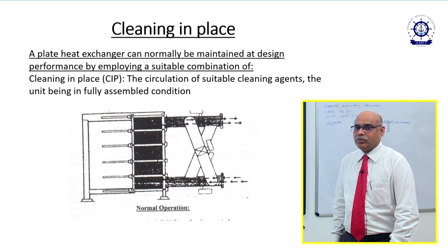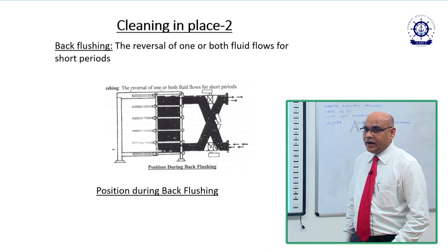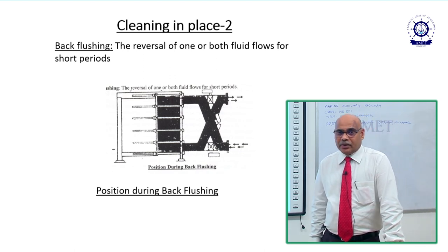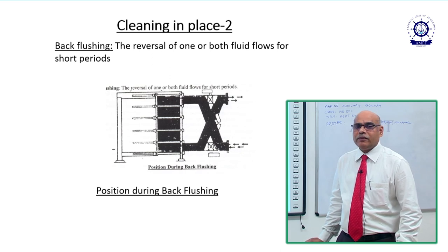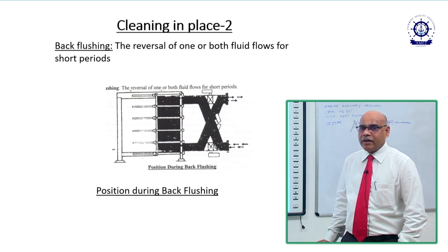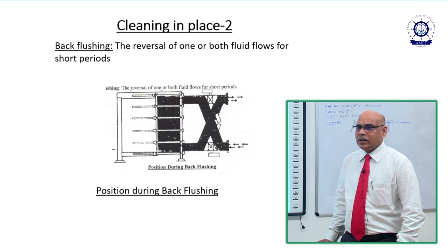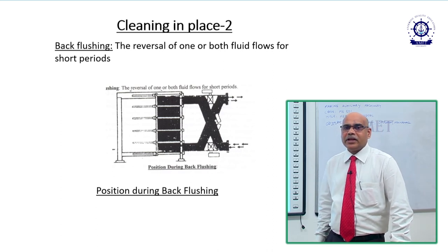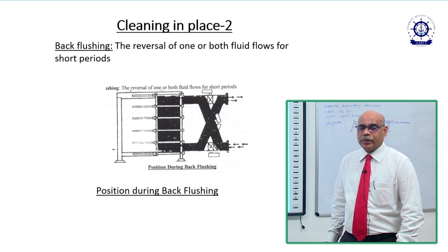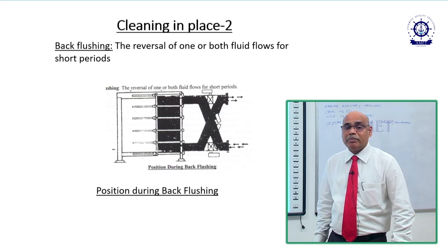Chemical cleaning in place is the most modern method for cleaning plate type heat exchangers. Back flushing is another option — one of the fluids flows in the reverse direction. For example, seawater is diverted to flow in the reverse direction. This removes all debris and clogging from the plates and improves the performance of the heat exchanger. At regular intervals, plate type heat exchangers should be back flushed.